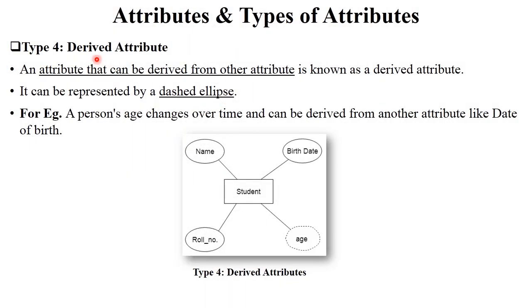The last type is derived attribute. A derived attribute can be derived from other attributes. For example, the attribute age — a person's age changes over time, and you can calculate age according to their date of birth. So age is a derived attribute, meaning you can calculate it from the birth date of the person. Derived attributes are represented by a dashed ellipse.